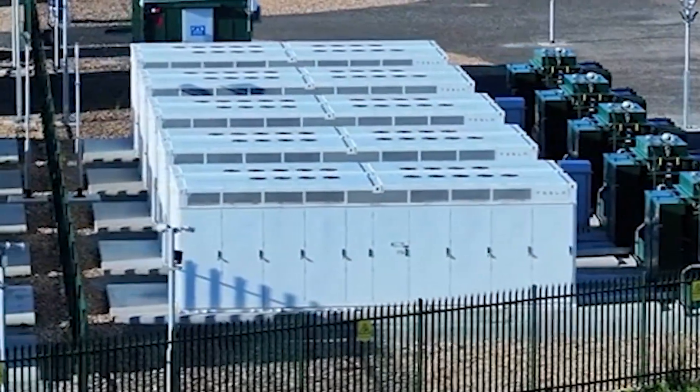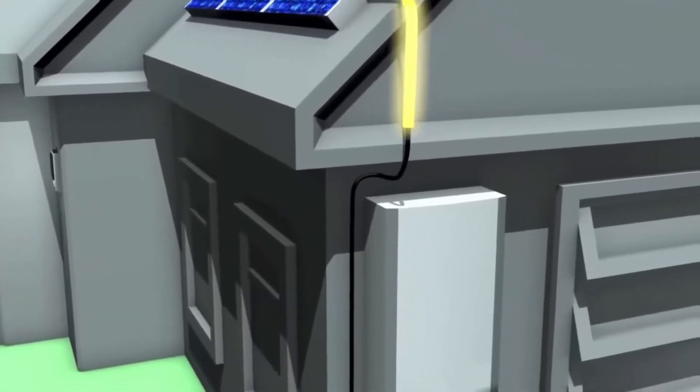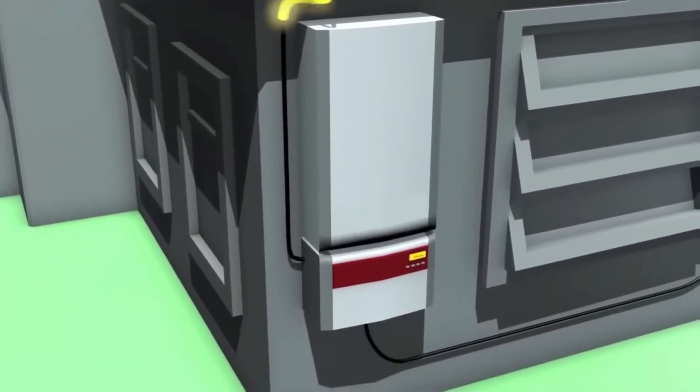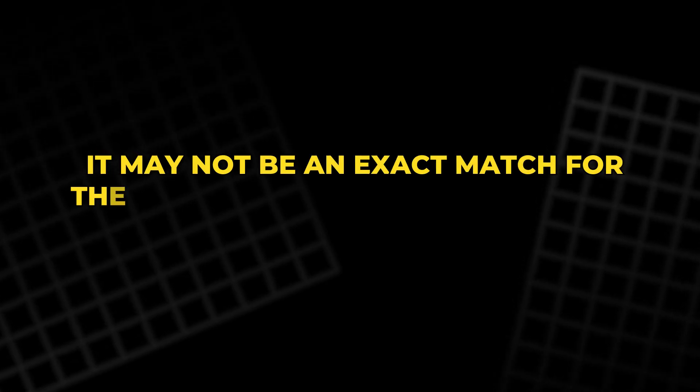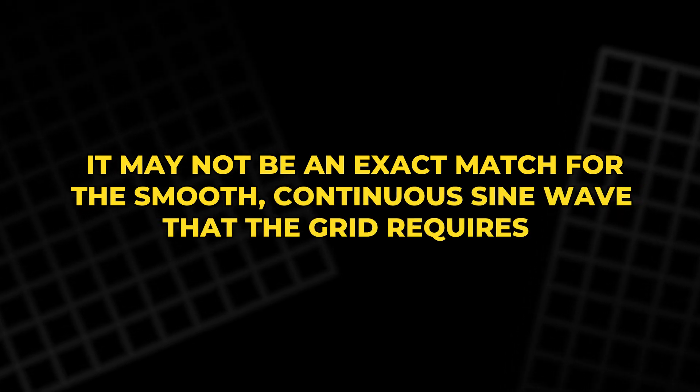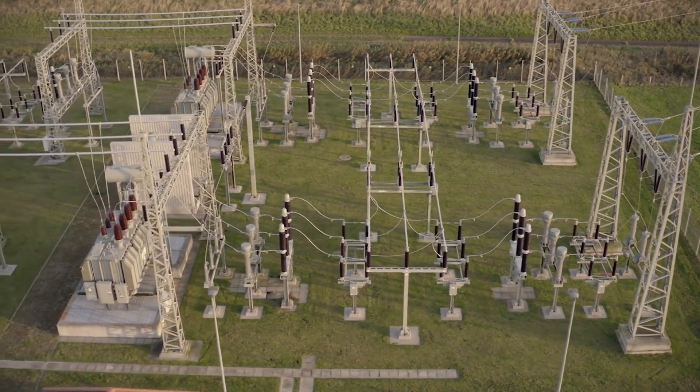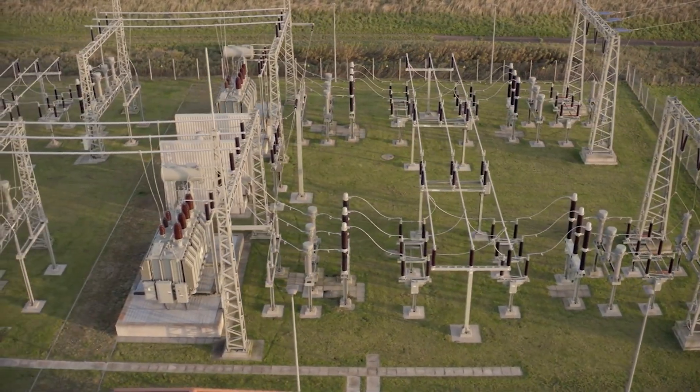However, even modern inverters are not perfect. A basic inverter may generate an AC signal that's a rough approximation of a sine wave, but it may not be an exact match for the smooth continuous sine wave that the grid requires.